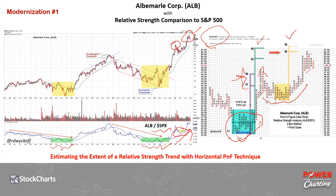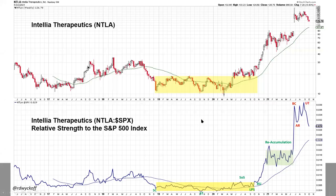This gives us a way to identify how far relative strength can go in its upward performance before it needs to go into a reaccumulation structure or into distribution. You can see distribution right here in the lower chart. It's really too early to tell at this point, but you can see a range-bound condition in the relative strength.